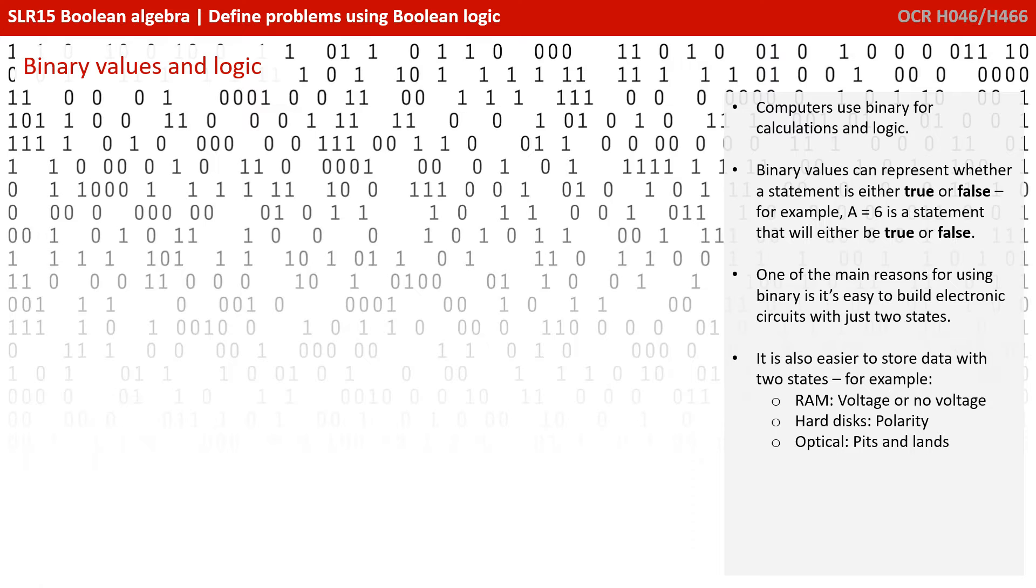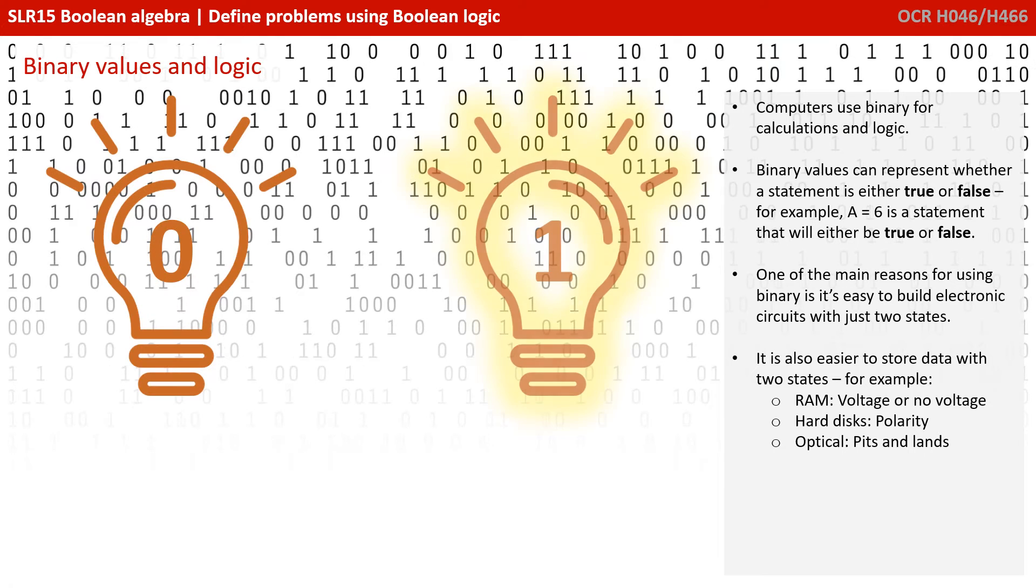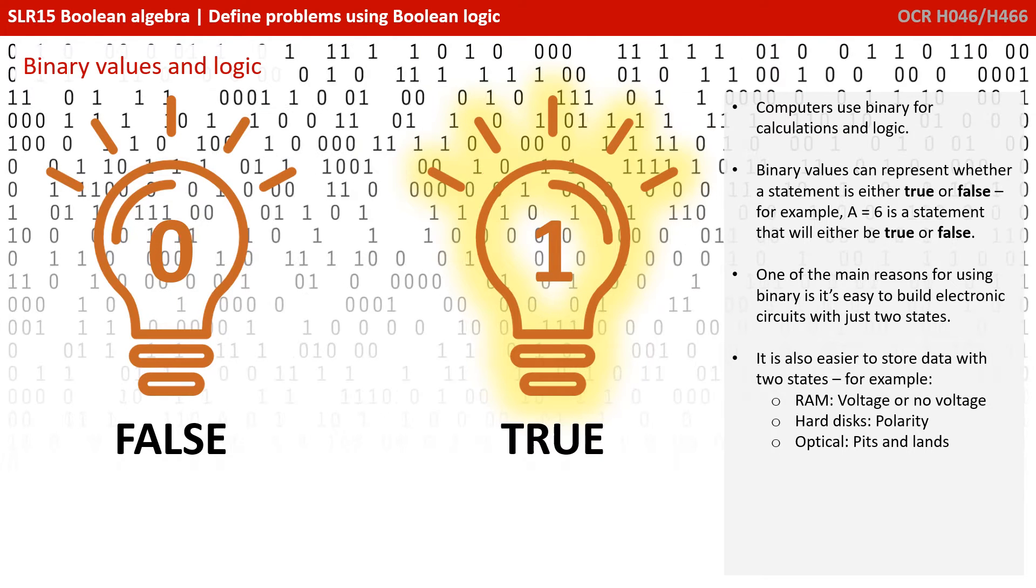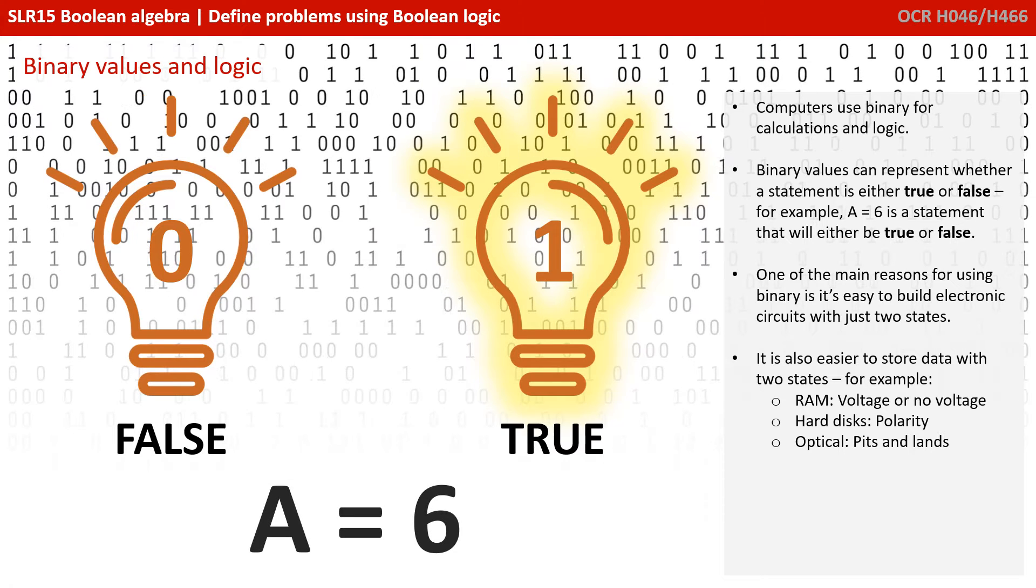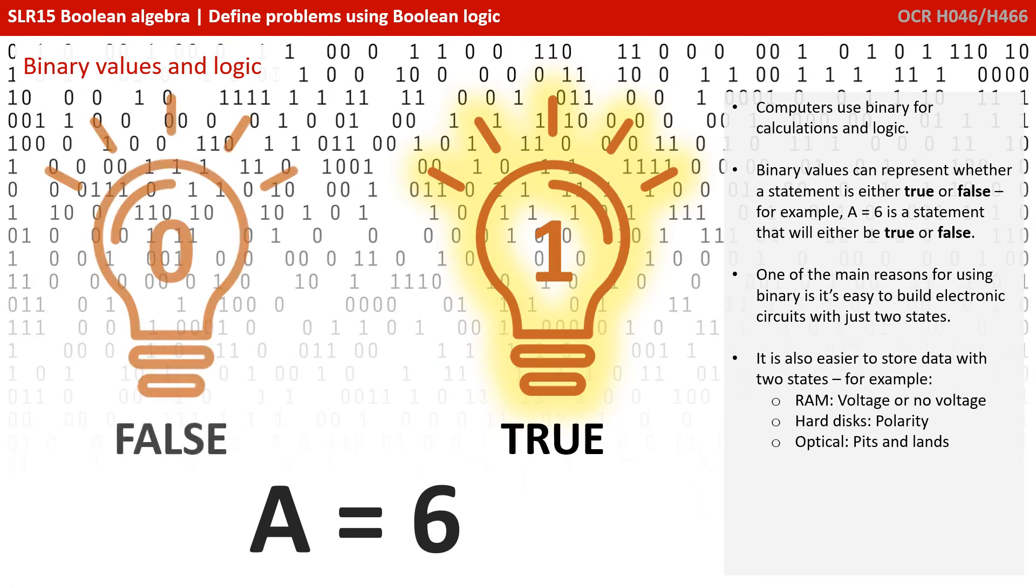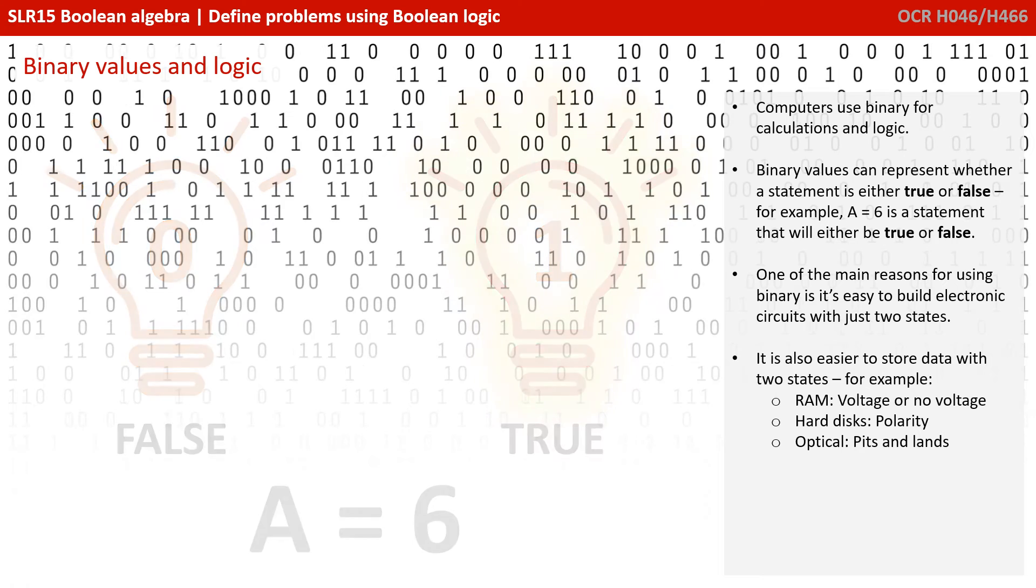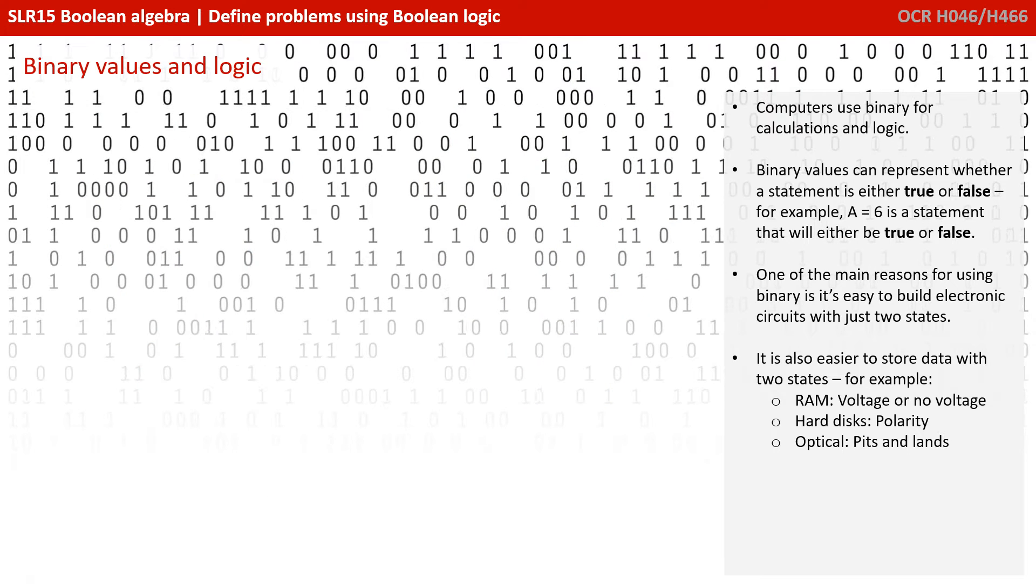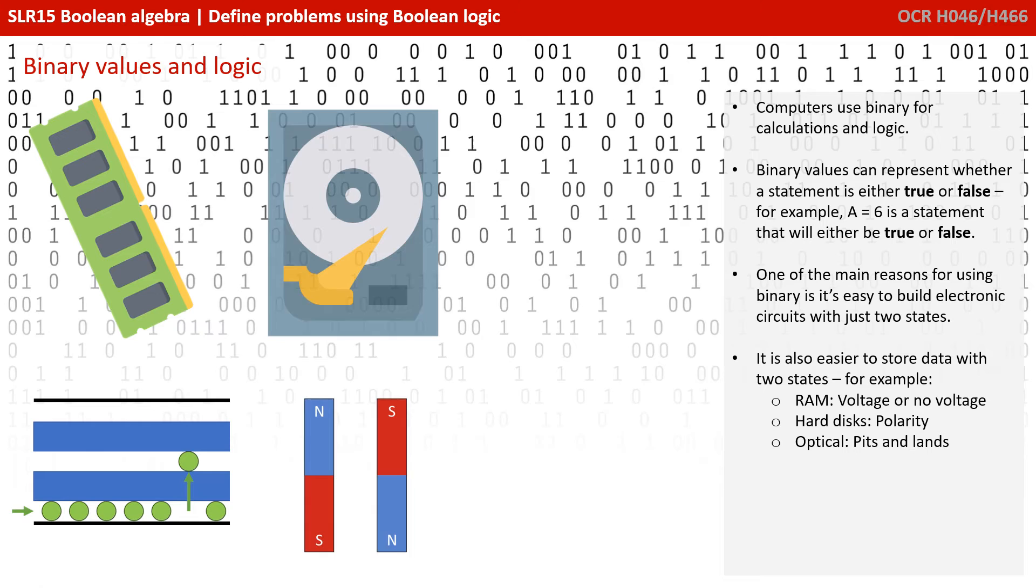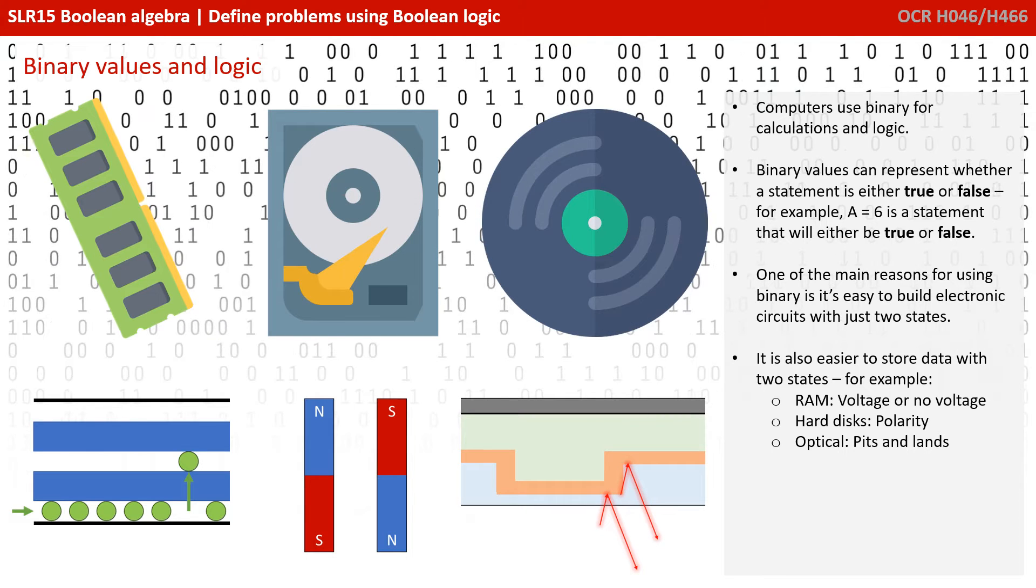So computers use binary for calculations and logic. Binary values can represent whether a statement is either true or false. For example, a equals 6 is a statement which will either be true or false.